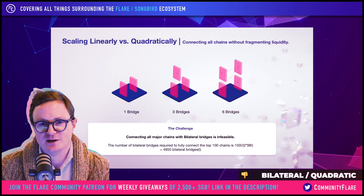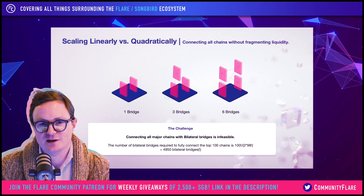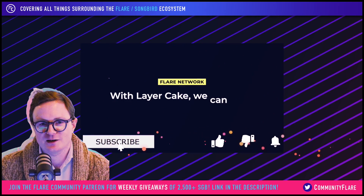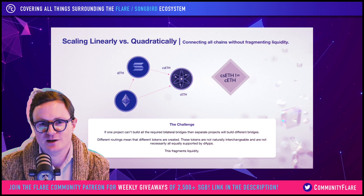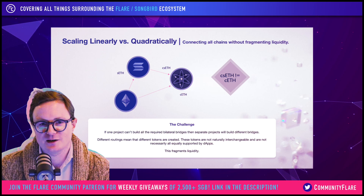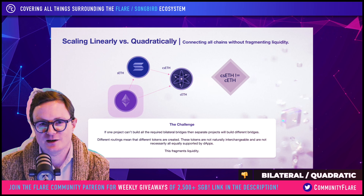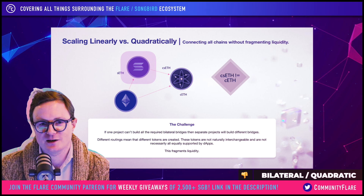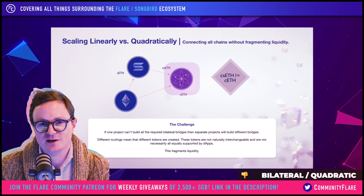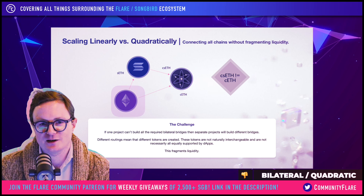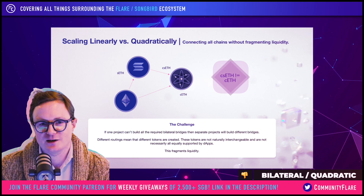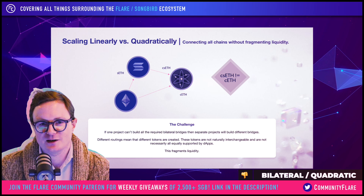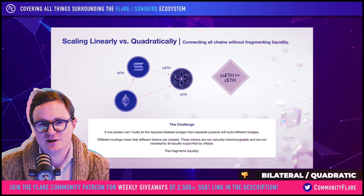We don't need that with Layer Cake. With Layer Cake we can scale linearly. The other thing is that we can create the same token on each chain. In the bilateral case, if you have ETH on Ethereum and you move it to Solana, you get sETH — Solana ETH. If you move that to Cosmos, you get csETH — Cosmos Solana ETH. But if you bridge from Ethereum directly to Cosmos, you just get cETH. And Cosmos Solana ETH does not equal Cosmos ETH.